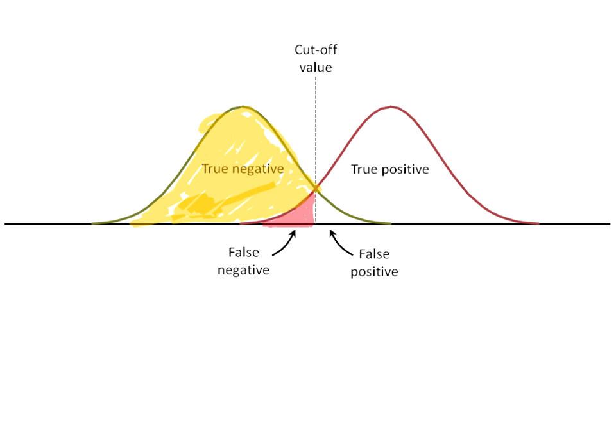False negatives shouldn't be negative — they should be positive. On the flip side, we have true positives: they do have a positive test and also have the actual disease or syndrome. They are positive by name and positive by nature. The last category is false positives — they are showing up as positive with the test even though they are negative for the disease.